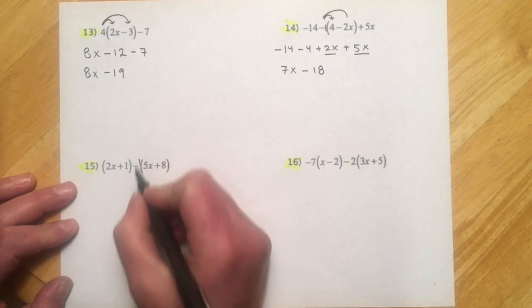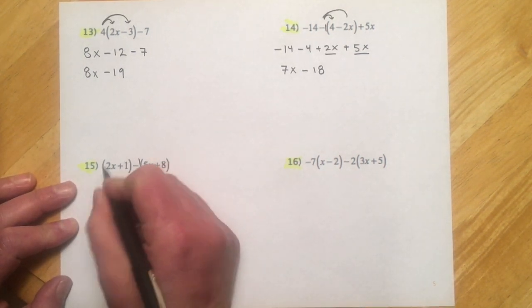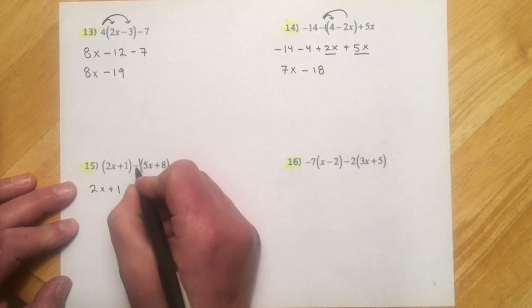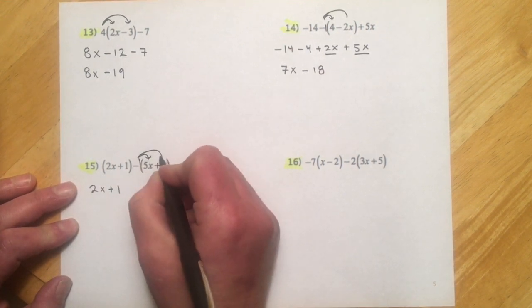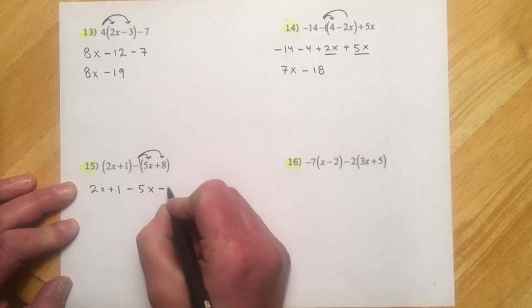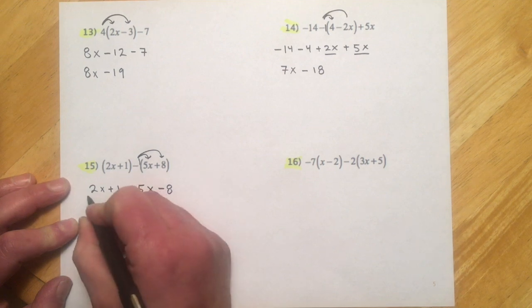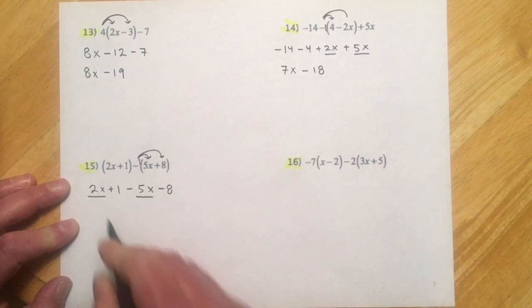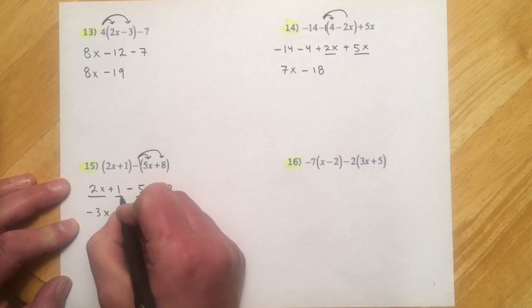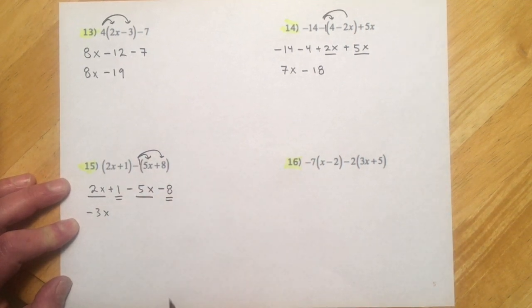15. Just a little trick with that little negative 1. These parentheses aren't actually doing anything, so we can just drop those. But this, because of that negative sign, I have to get the negative distributed. So I'll make a minus 5x and a minus 8. And then here I can put those together. 2 minus 5 is going to make a negative 3x. Plus 1 and minus 8. So that'll be minus 7.